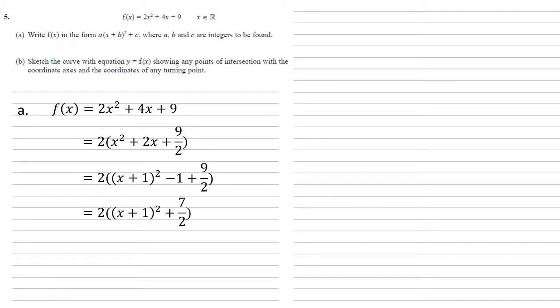Simplifying this gives us 2(x + 1)² + 7/2. Now to get this into the form asked for in the question we need integers everywhere, so we're going to multiply back by the 2. We get 2(x + 1)² + 7.